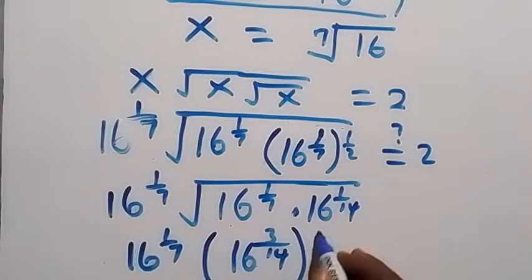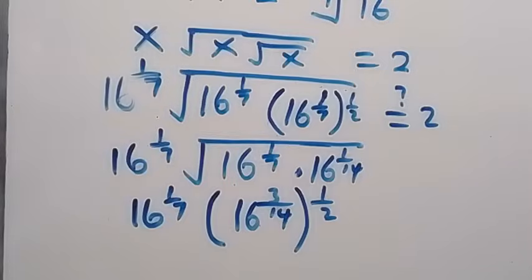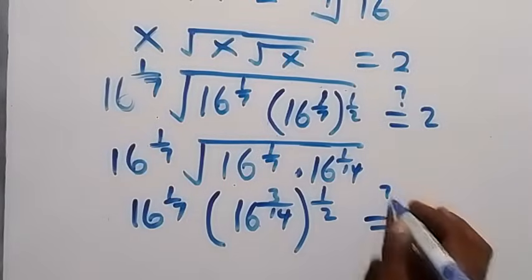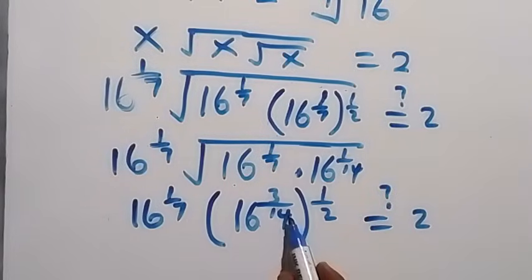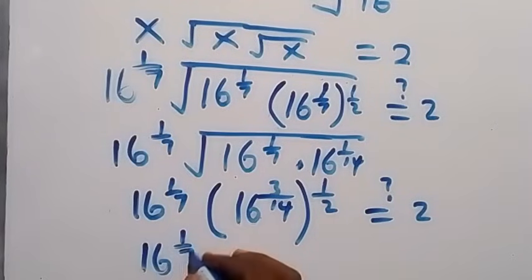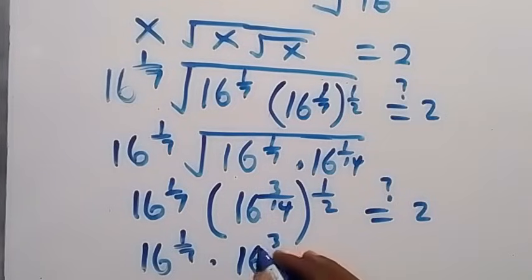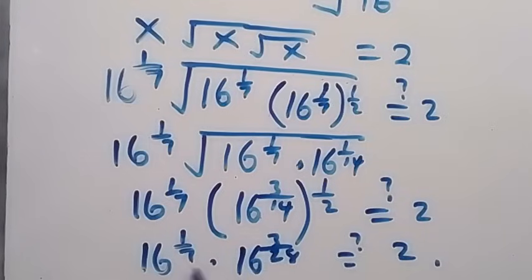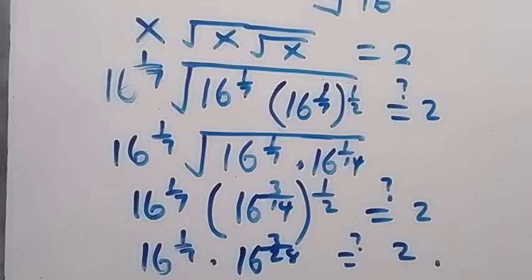The remaining square root is written as raised to power 1 half, and this should equal 2. Multiplying gives us 3 over 28, so we have 16 raised to power 1 over 7 multiplied by 16 raised to power 3 over 28 equals 2. The LCM here is 28, and when we bring them together: 7 goes into 28 four times, so 4 times 1 is 4, and 4 plus 3 is 7.